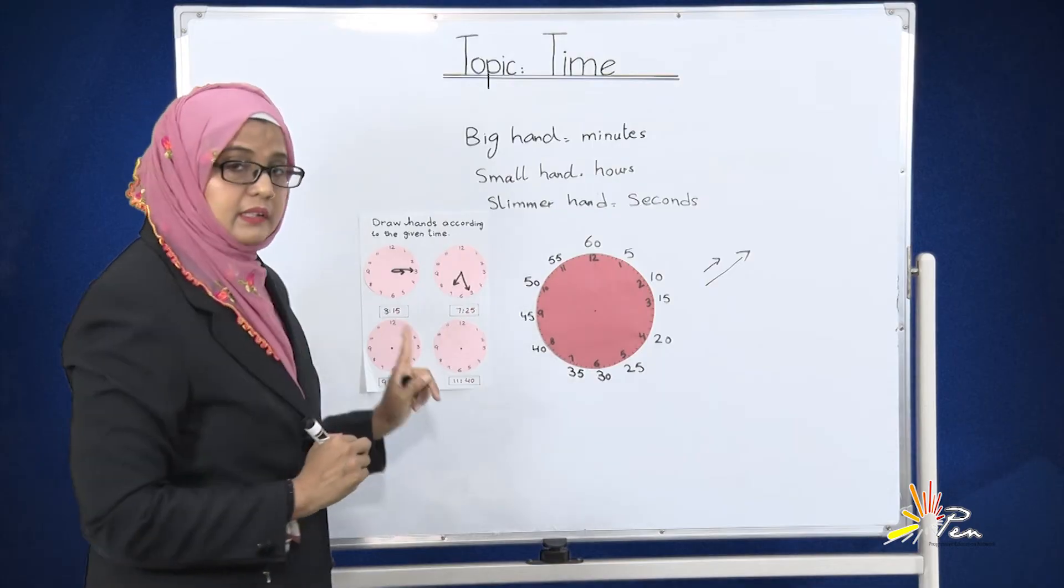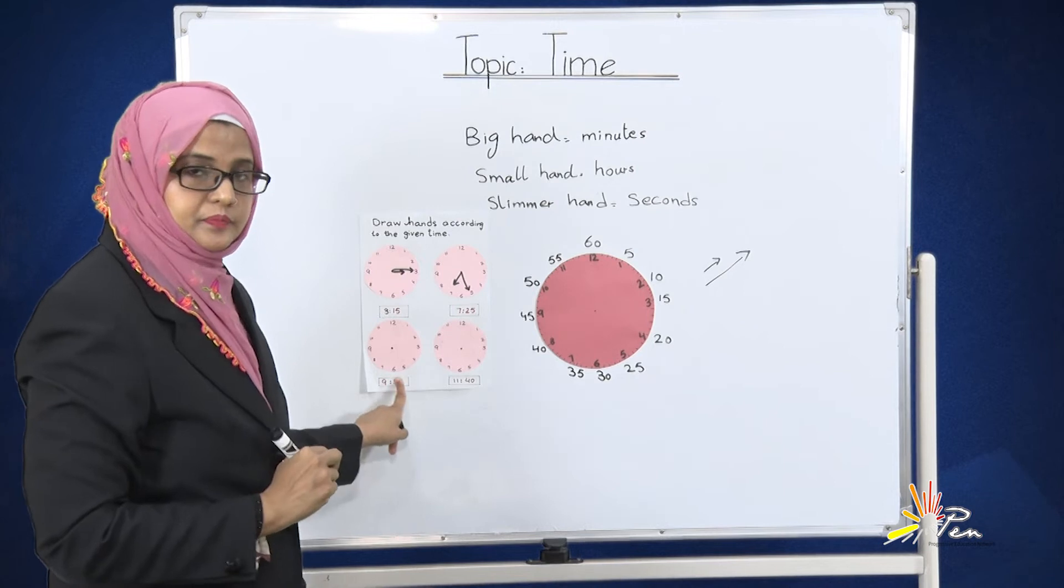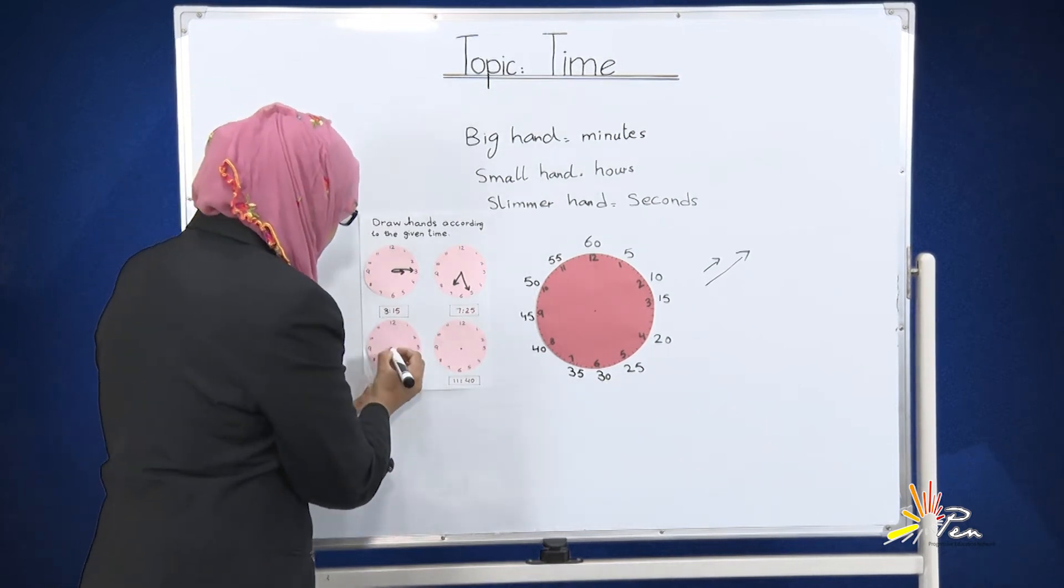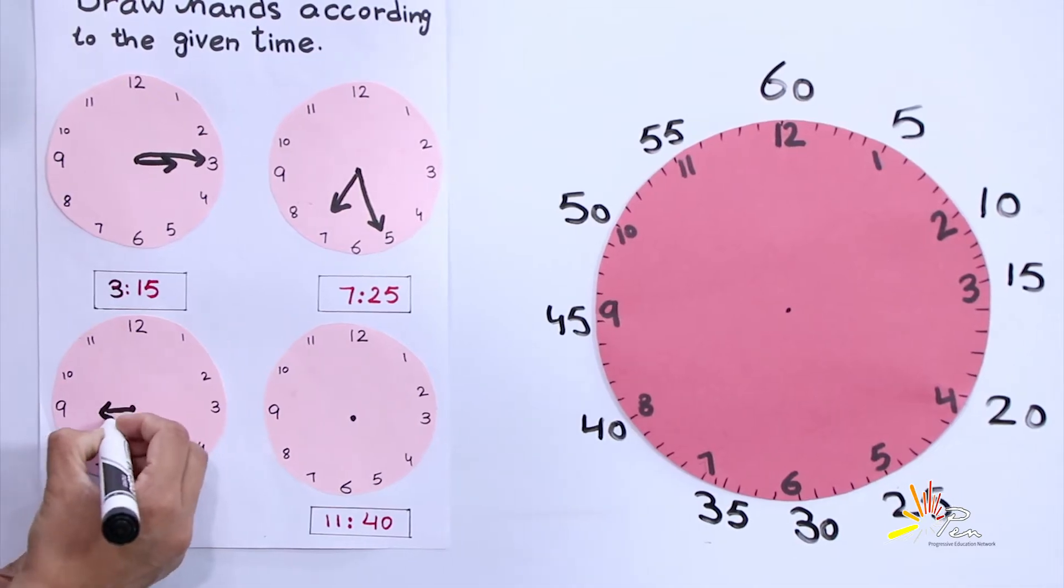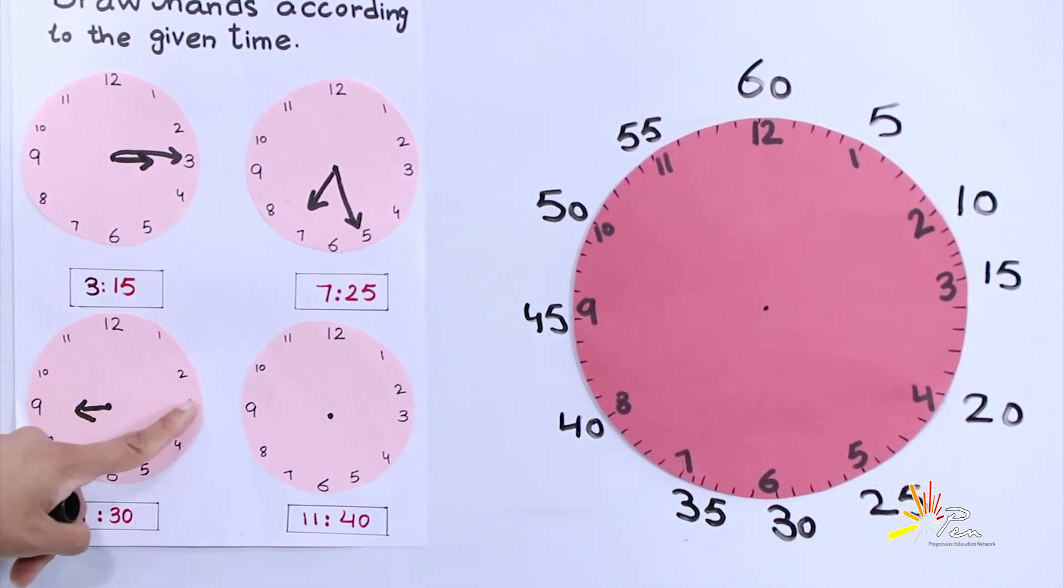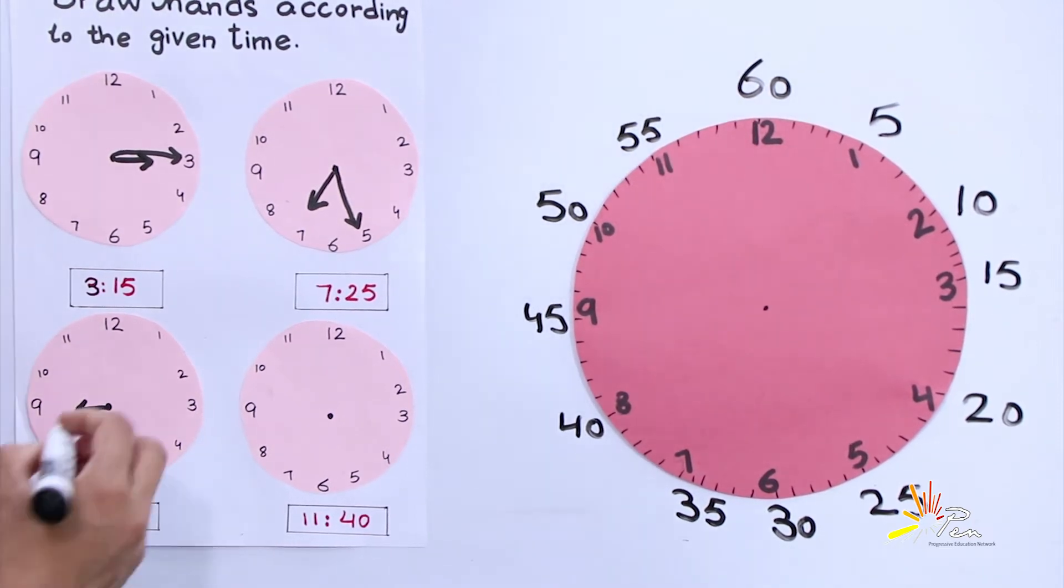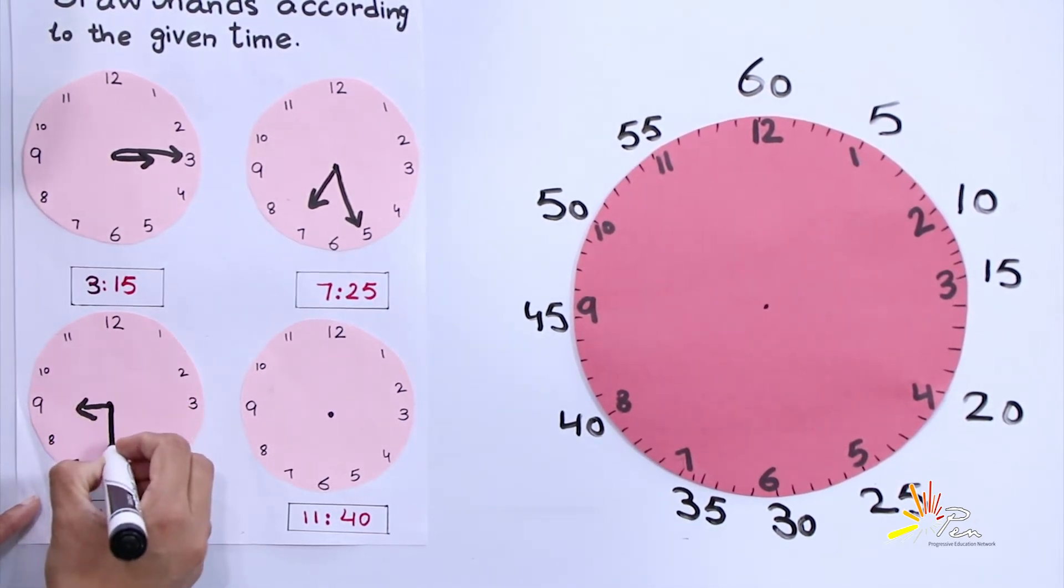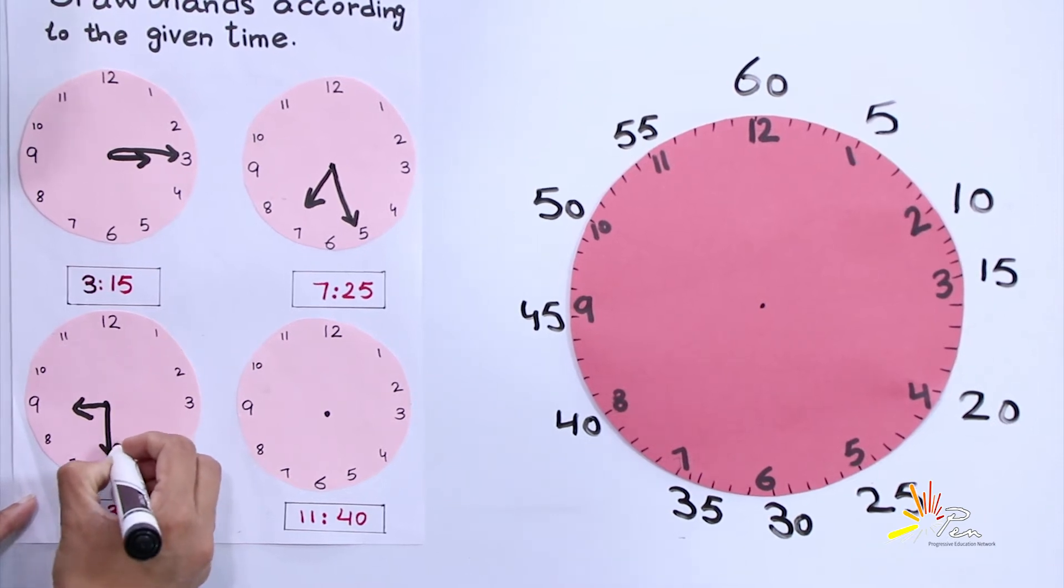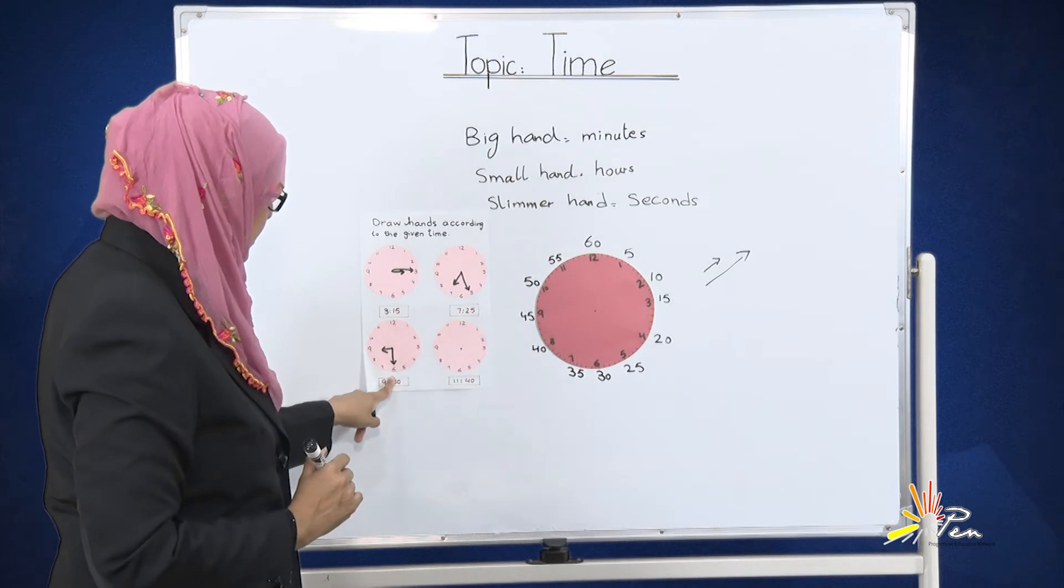In the third clock we have time 9:30. 9, smaller hand. And 30: 5, 10, 15, 20, 25, 30. I am going to draw a big hand for minutes. 9:30.